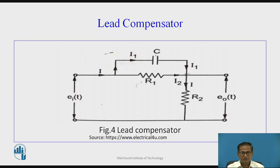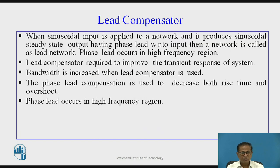Lead compensator. This is the circuit diagram for the lead compensator. Here, ei(t) is the input signal and e0(t) is the output signal. When a sinusoidal input is applied to a network and it produces a sinusoidal steady state output having phase lead with respect to input, then the network is called a lead network. Generally, phase lead occurs in the high frequency region. Lead compensator is required to improve the transient response of the system. Bandwidth is increased when a lead compensator is used. The phase lead compensation is used to decrease the rise time and overshoot.